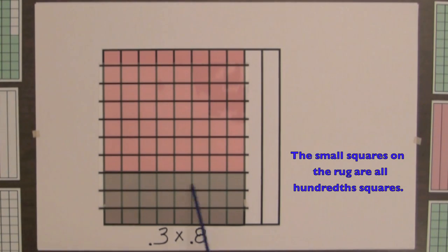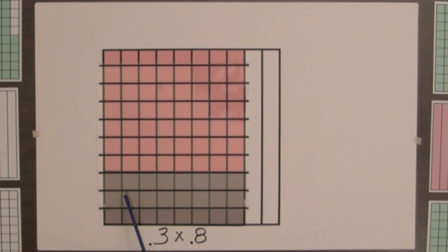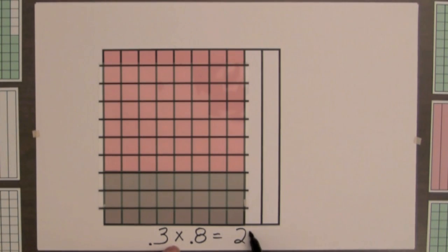Also, the small squares on the rug are all hundredths squares. So the rug covers 24 hundredths, 3 of 8 rows. And 3 tenths times 8 tenths equals 24 hundredths.